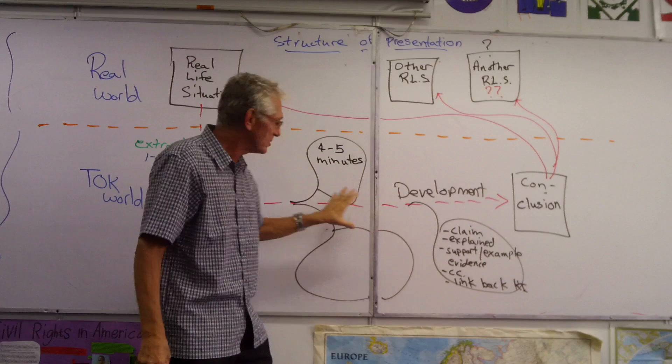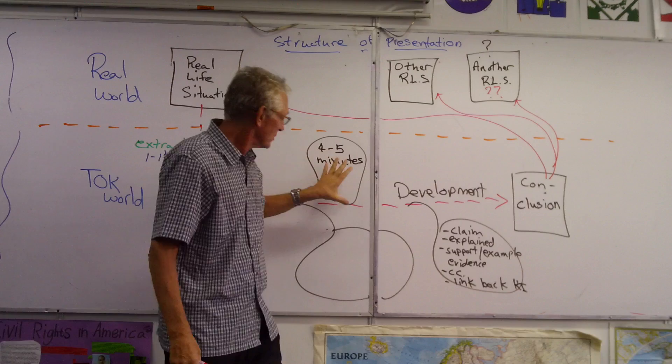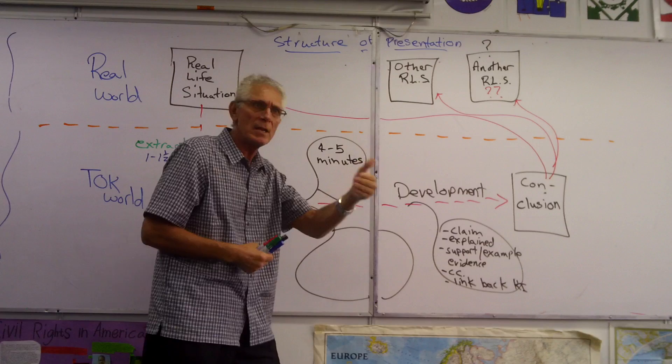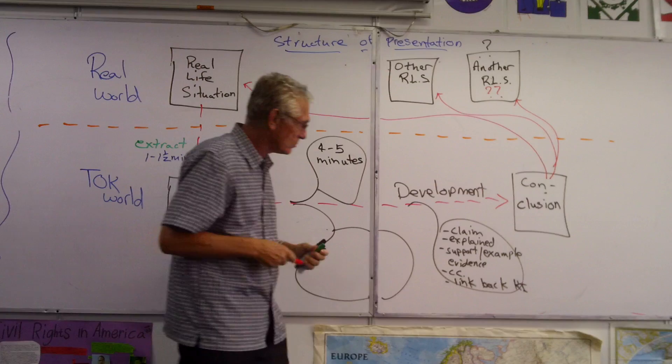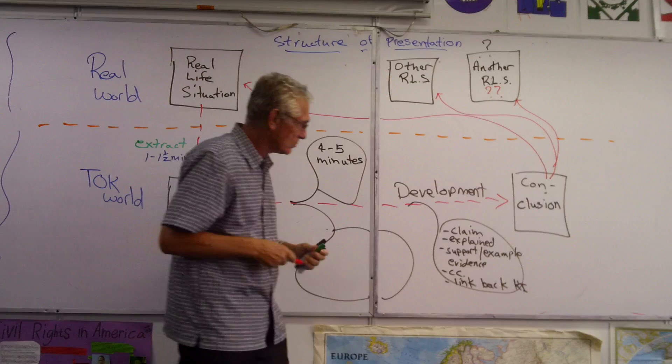The developments cover Criteria C and D. Criteria C is your involvement and understanding of your KI. Criteria D is your involvement — that's where you make sure you use some personal examples, just like in your essay.